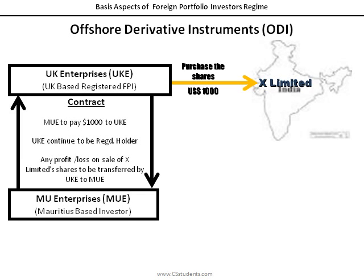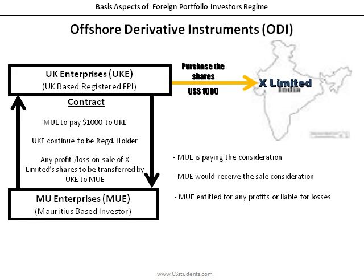Further, in our example, UK Enterprises would sell the shares of X Limited as per the instruction of MU Enterprises. The entire sale proceeds received by UK Enterprises will be transferred to MU Enterprises. UK Enterprises will charge some 1% to 2% service charges for this. In this transaction, MU Enterprises is ultimately paying the purchase consideration, ultimately receiving the sale consideration, and will ultimately be entitled for any profits earned and will bear the losses, if any, on sale of the equity shares. UK Enterprises is just a mediator carrying out the transaction for MU Enterprises and holding the securities on its behalf.